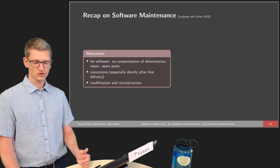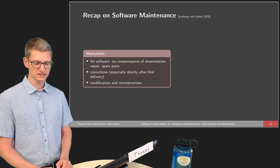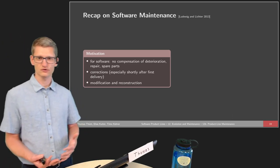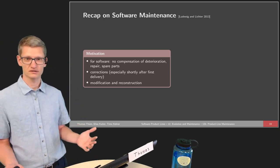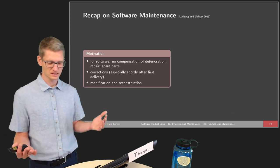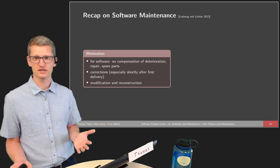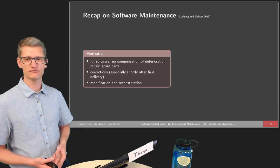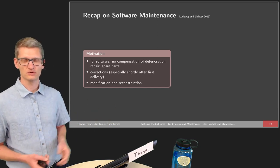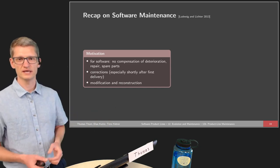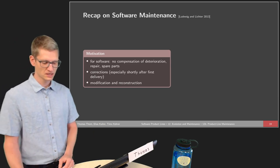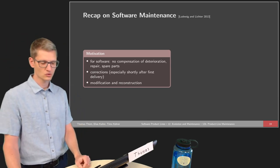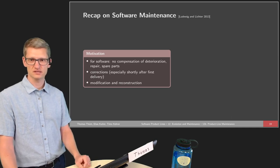First of all, what is the motivation for maintenance? For software, there's no compensation of deterioration. There's no repair necessary in the sense that something gets broken and we need to fix it. We don't have parts that just break and need to be replaced — there are no spare parts. So why do we have maintenance at all?